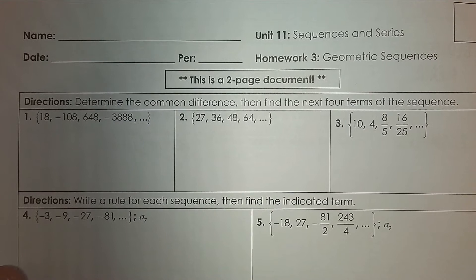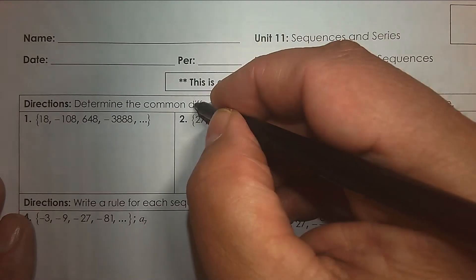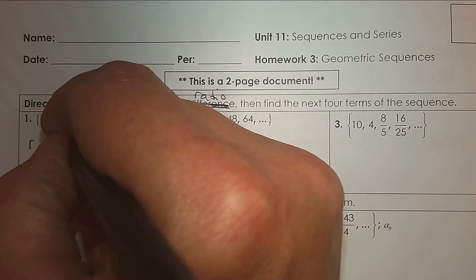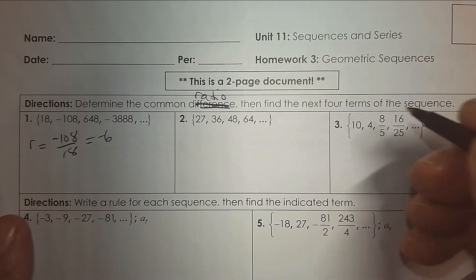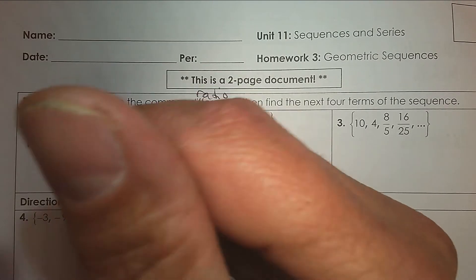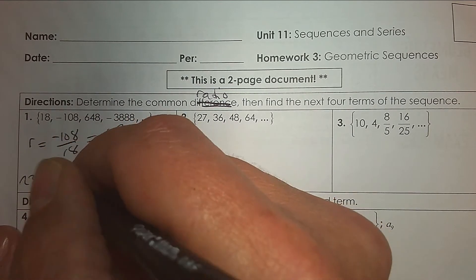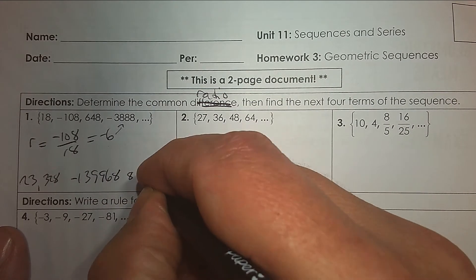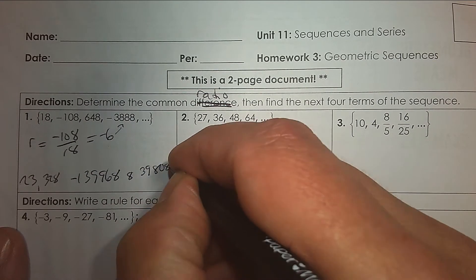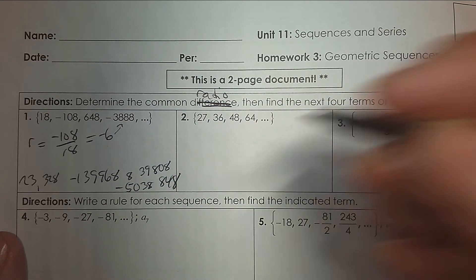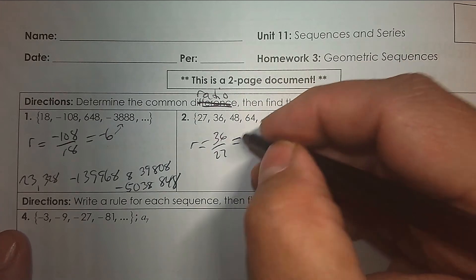Here's your homework for geometric sequences: determine the common ratio. For arithmetic it's the difference, but here it's R. All I need is two consecutive numbers and divide. Then I just multiply by negative six — use your calculator, that's fine — and you get these huge obnoxious numbers.